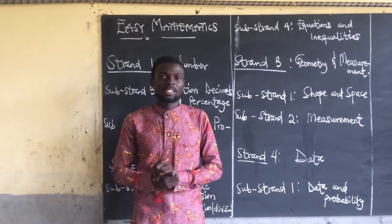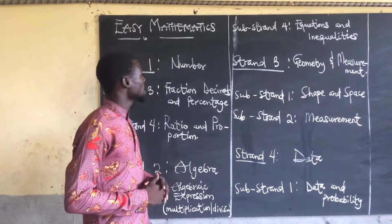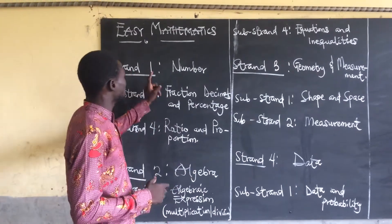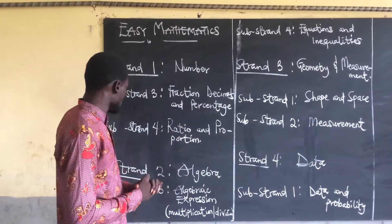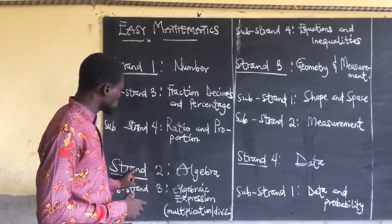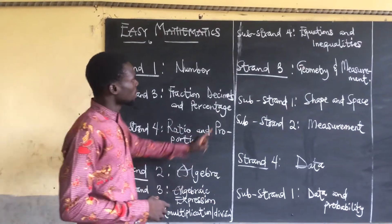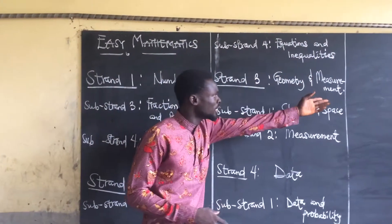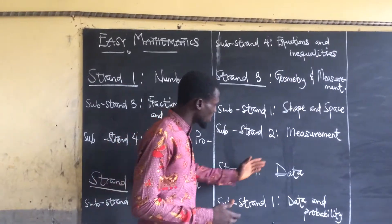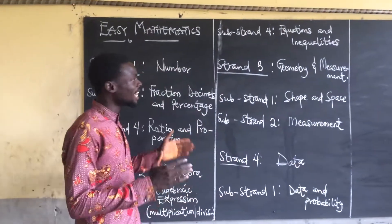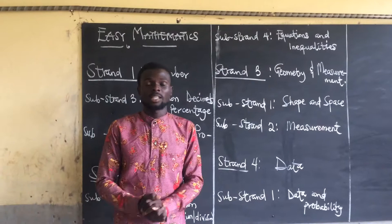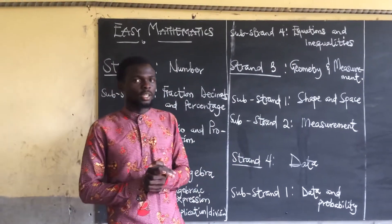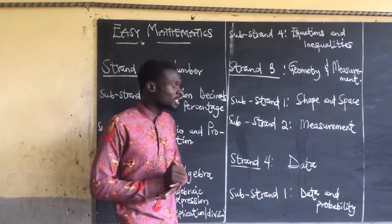Once again, this semester, let's look at the strands that we'll be talking about. Strand 1 is number. Strand 2 is algebra. Strand 3 is geometry and measurement. Strand 4 is data. And under each strand, there are substrands that we'll be talking about. Those will be the main ones for this semester.